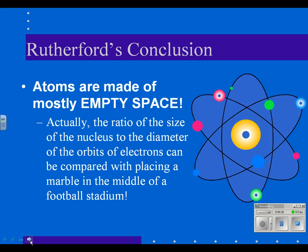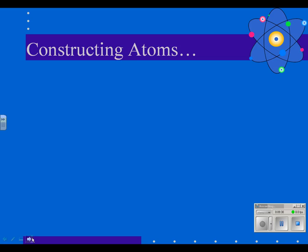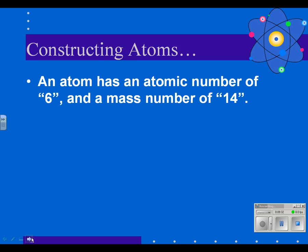I don't care if you actually do the 288 rule, but you should be able to do this, and we'll do this in class tomorrow, to be able to construct an atom that has an atomic number of 6 and a mass number of 14.